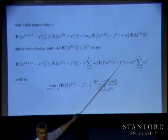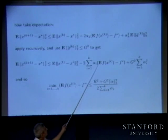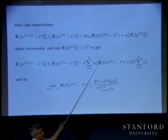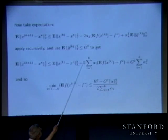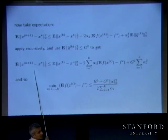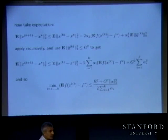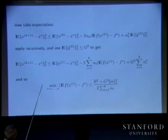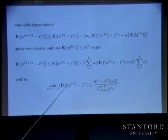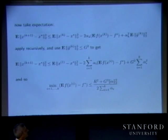Apply this recursively, and you get: the expected value of |x_{k+1} - x star|^2 is less than R squared minus 2*sum(alpha_i * suboptimality_i) plus g^2 * sum(alpha_i^2). Then turn this around and you get: the min over i from 1 to k of the expected suboptimality is ≤ (R^2 + g^2 * ||alpha||^2) / (2 * sum(alpha)). That's the same result as before.